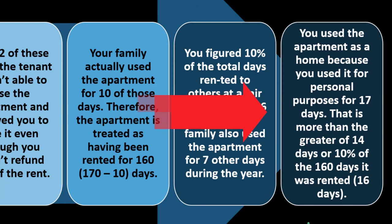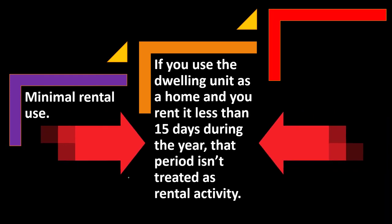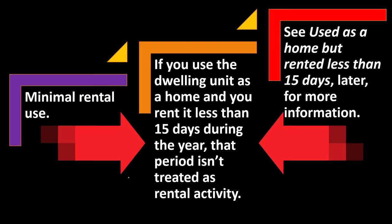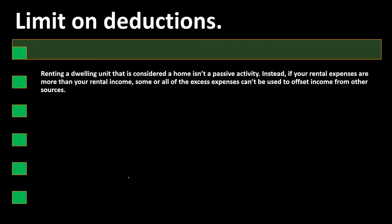There are two tests: the allocation between rental and personal property, and the calculation of whether the property is used as a home. Minimum rental use rule: if you use the dwelling unit as a home and rent it less than 15 days during the year, that period isn't treated as rental activity.